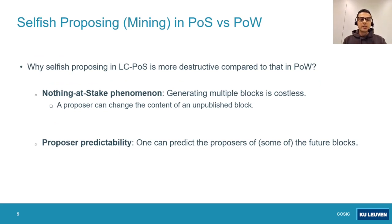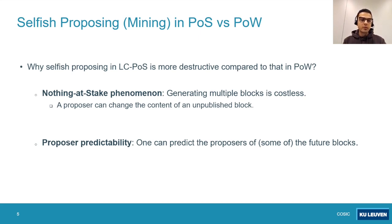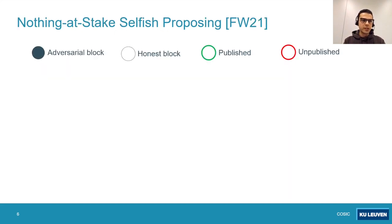There are two main factors that make selfish proposing more destructive compared to selfish mining in proof of work. The first factor is the nothing-at-stake phenomenon, and the second factor is proposer predictability. By nothing-at-stake, we mean that in proof-of-stake protocols, generating multiple blocks is costless. Because of that, an adversary can easily change the content of a block before publishing it. The other factor is proposer predictability — in proof-of-stake protocols, a proposer can predict some information regarding future blocks.